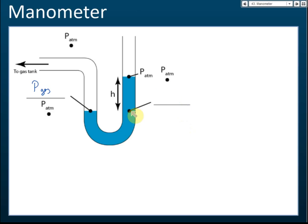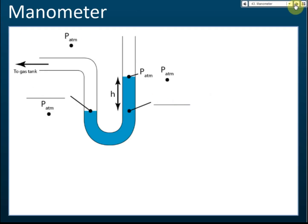At the reference point on the open side, two things contribute to the pressure: the atmospheric pressure pressing down, and the pressure of the liquid column above. So the pressure at that point equals the atmospheric pressure plus the pressure of the liquid. Since that point is at the same level as the surface on the tank side, the pressure of the gas equals the atmospheric pressure plus the pressure of the liquid.